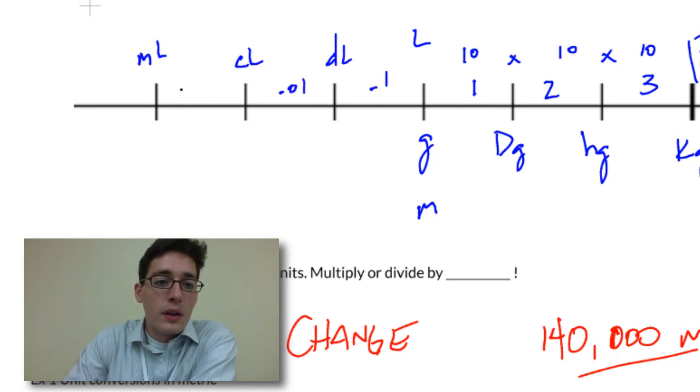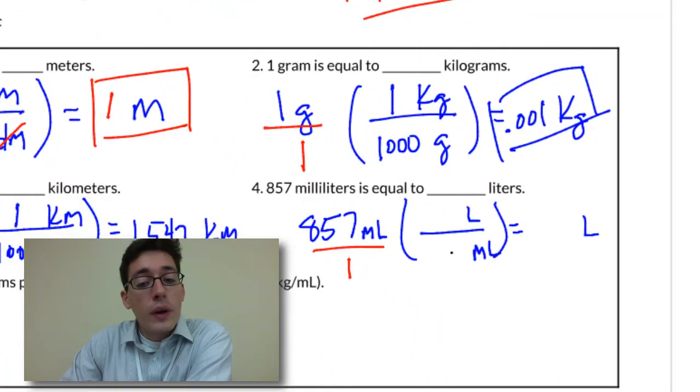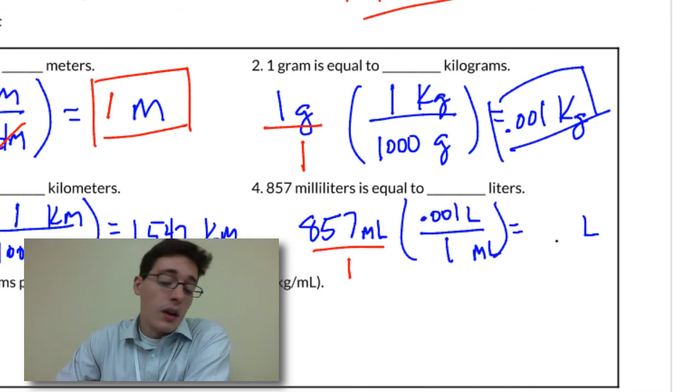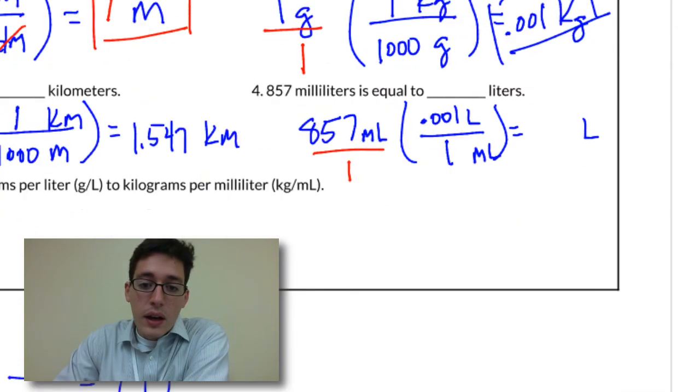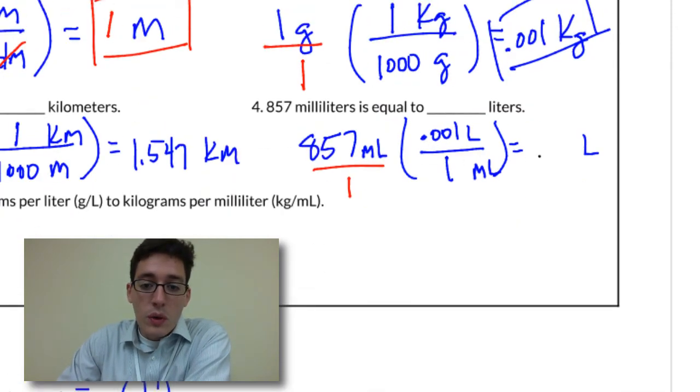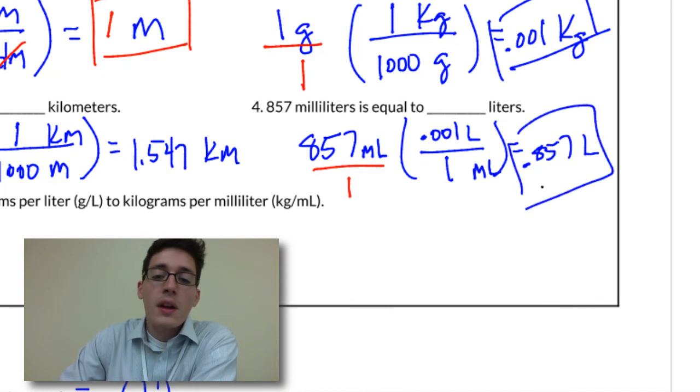So we can do it one of two ways. One milliliter is 0.001 liters. Or we can do it the other way, and I'll show you that in class if you're interested in doing that. But remember, change what you want. So 857 times 0.001 gives us 0.857 liters. And that's how to do those other two.